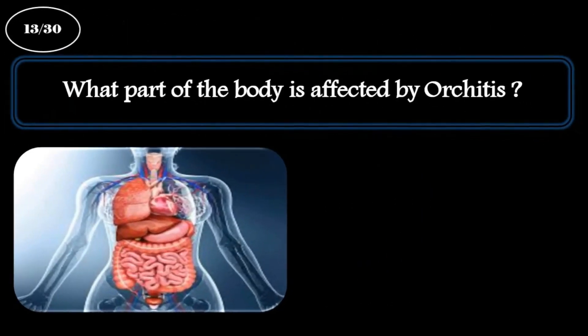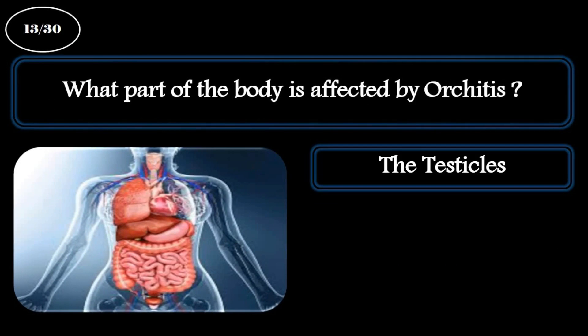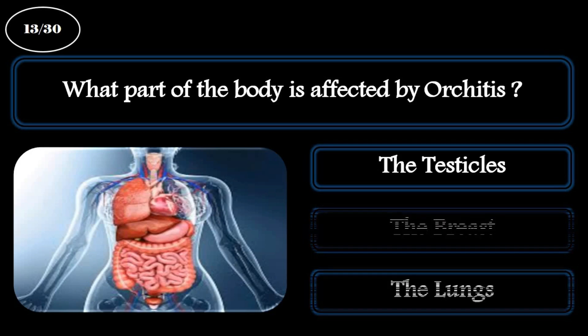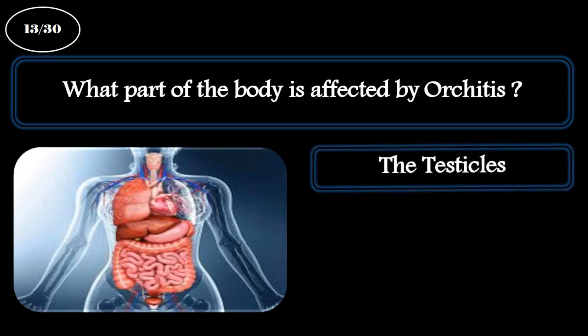Question 13. What part of the body is affected by orchitis? A: The testicles. B: The breast. C: The lungs. The correct answer is the testicles.